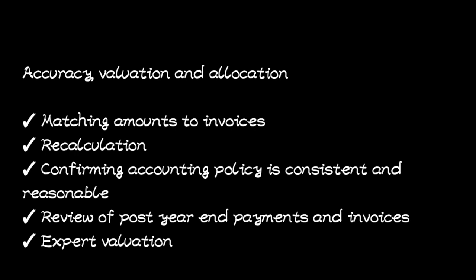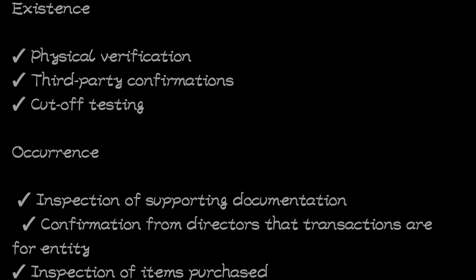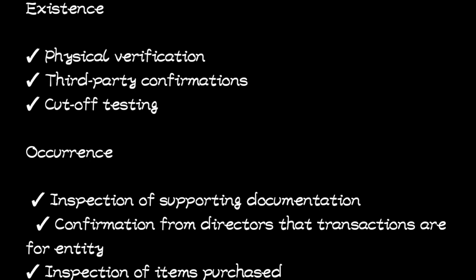The next assertion is existence, which also applies to account balances. Existence is about confirming if something actually exists — mainly related to non-current assets. For example, if a car was bought, you have to make sure the car is actually there. Substantive procedures include: physical verification (e.g., visiting to see if land is actually there), third-party confirmations such as calling the person who sold the land to the company, and cut-off testing to confirm the item was recorded in the correct accounting period.